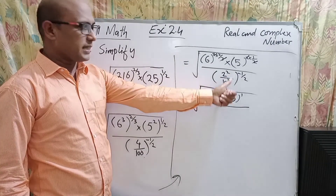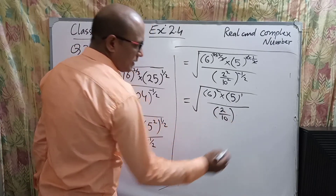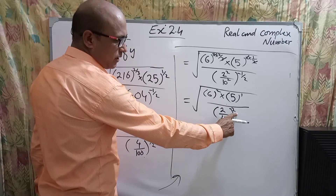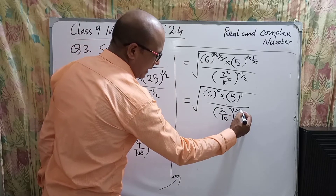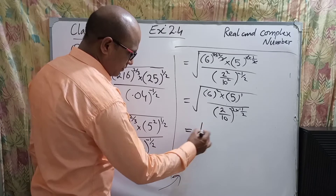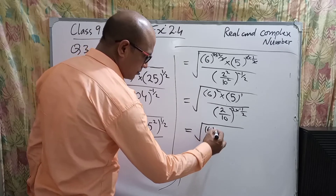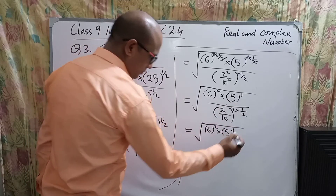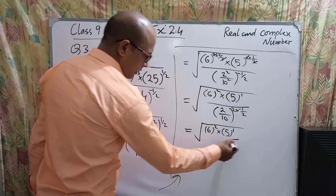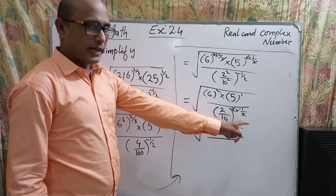Since both 2 and 10 have the same power, we write that power outside the bracket and multiply it by minus 1/2. The numerator terms 6 power 2 and 5 power 1 remain the same. In the denominator the power 2 and 2 will be multiplied, giving us the exponent to work with.